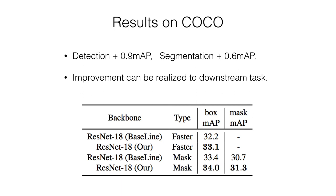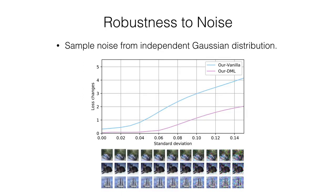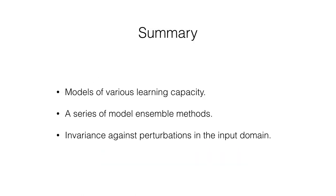We also conduct experiments on detection and segmentation based on ResNet-18 trained with KDCL, and improvement can be realized on downstream tasks. Gaussian noise is applied to testing images, and the loss gap from KDCL to the baseline becomes more significant as the noise intensity scales up, showing our method is more robust to random noise. In summary, we describe an online knowledge distillation framework based on a collaborative learning strategy. Models of various capacity can benefit from collaborative learning, and a series of model ensemble methods are designed to dynamically generate high-quality soft targets, enhancing invariance against perturbations in the input domain.